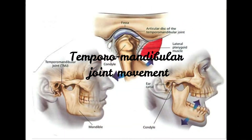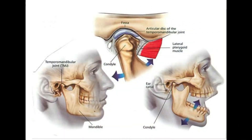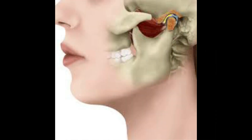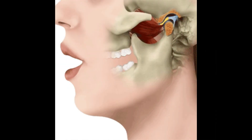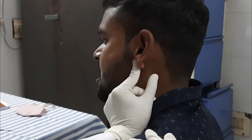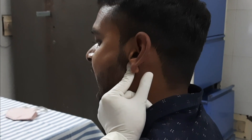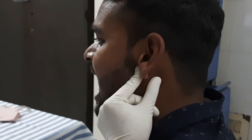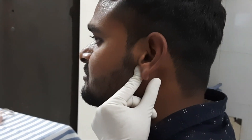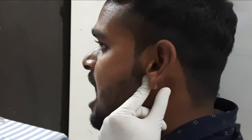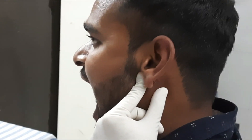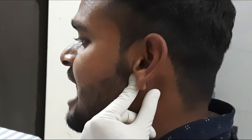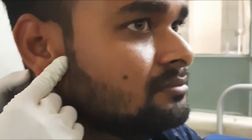Assessment of the temporomandibular joint: Mouth opening involves two functions of the temporomandibular joint — rotation of the condyle in the synovial cavity and forward displacement of the condyle. To assess this, the examiner's finger is placed in front of the tragus and thumb in front of the lower part of the mastoid, and the patient is asked to open his mouth wide. As the condyle of the mandible slides forward, the index finger can be indented in this space.